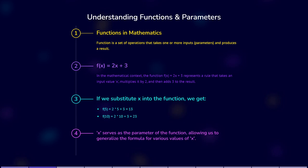For instance, if we substitute x = 5 into the function, we get f(5) = 2 * 5 + 3 = 13. If we substitute x = 10, we get f(10) = 2 * 10 + 3 = 23.